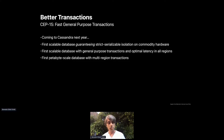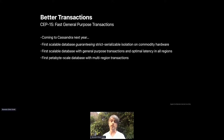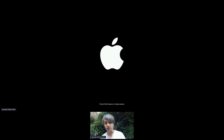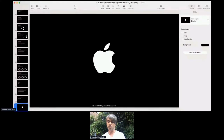We have now achieved ideal transactions. This work is coming to Cassandra next year — it's still under discussion on the Cassandra dev mailing list. When it lands, Cassandra will be the first scalable database that guarantees strict serializable isolation on commodity hardware — second only to Spanner and maybe some two-phase commit protocols — and the first to offer optimal commit latency in all regions, the first to offer optimal latency to all clients in all regions, and the first petabyte-scale database with true multi-region global transactions. The prototype has been published to GitHub, the white paper has been published, and there's extensive discussion on the Cassandra dev mailing list. Thank you for your time.